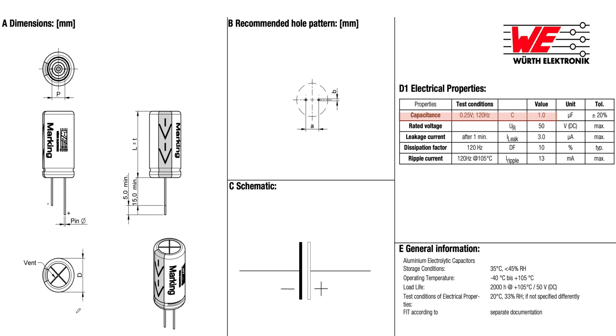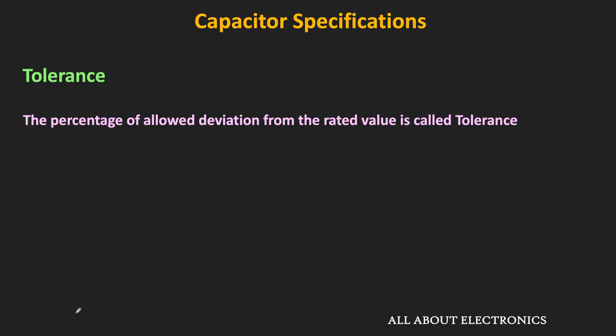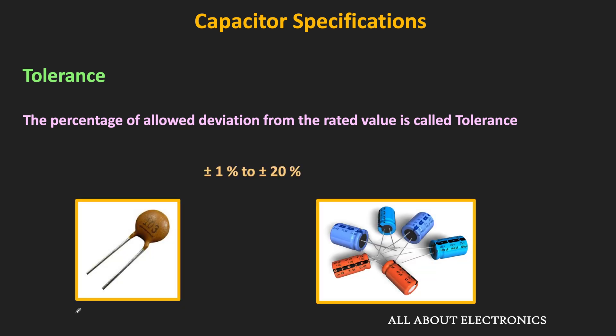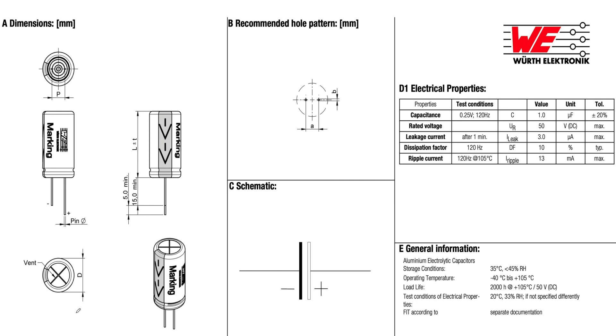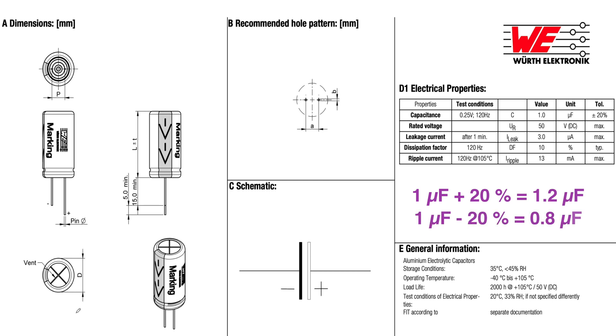The next specification is the tolerance. This tolerance is the percentage of allowed deviation from the rated value of the capacitance. Depending on the type of capacitor, this tolerance can vary from 1% to 20%. For example, the datasheet of the capacitor shown earlier has a tolerance of 20%, meaning the actual value could be as high as 1.2 microfarads or as low as 0.8 microfarads.